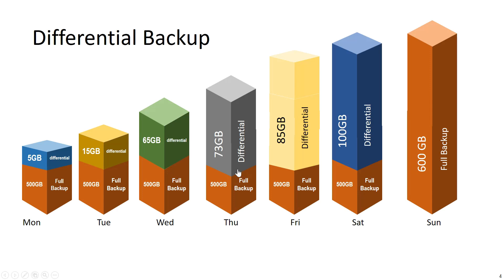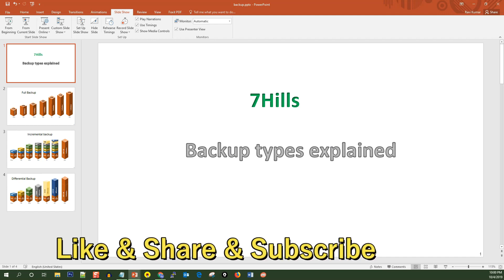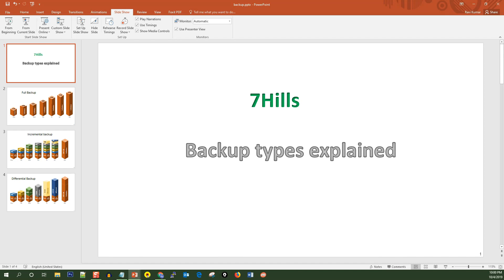Friends, Full Backup is a complete backup set — you back up all your data. Incremental Backup only backs up changes since the last backup. Differential Backup backs up all changes since the last full backup. That is the difference between backup types. Thanks for watching — stay tuned, please subscribe to the channel for more upcoming videos and courses.